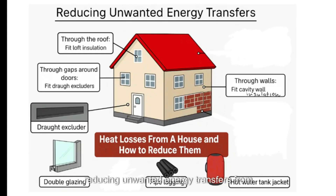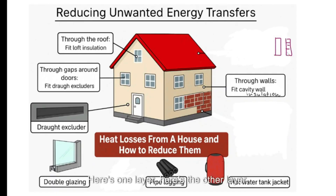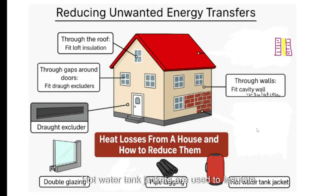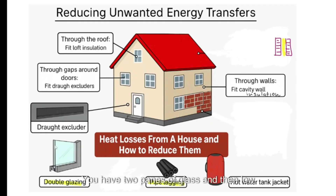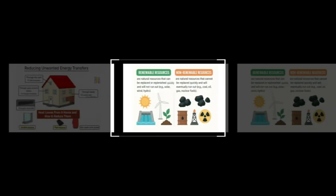To reduce unwanted energy transfers from buildings: cavity wall insulation uses foam between two layers of brick to reduce heat loss through walls; hot water tank jackets insulate hot water tanks; pipe lagging covers copper pipes carrying hot water; double glazing uses two panes of glass with low-pressure air between them; draft excluders are placed under doors or in post boxes; and loft insulation is used for the roof.